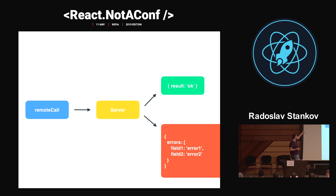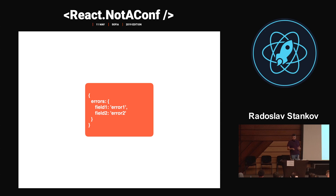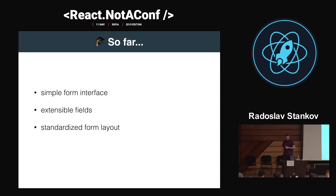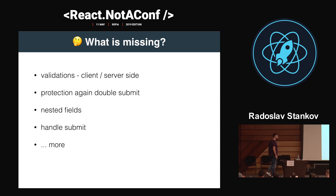When you click submit, you go to the server, it returns success or an error. You do a remote call and can either return a result that's okay or an error. The errors are just an object. I'm starting to build this tile of features and abstractions. So far what I have built is a very simple form interface, extensible fields where I can do whatever I want with them, and a standardized formula. But right now I'm missing quite a bit of things — I'm missing validation: client-side if you want a nice user experience, server-side if you want to be secure, and protection against double submit.